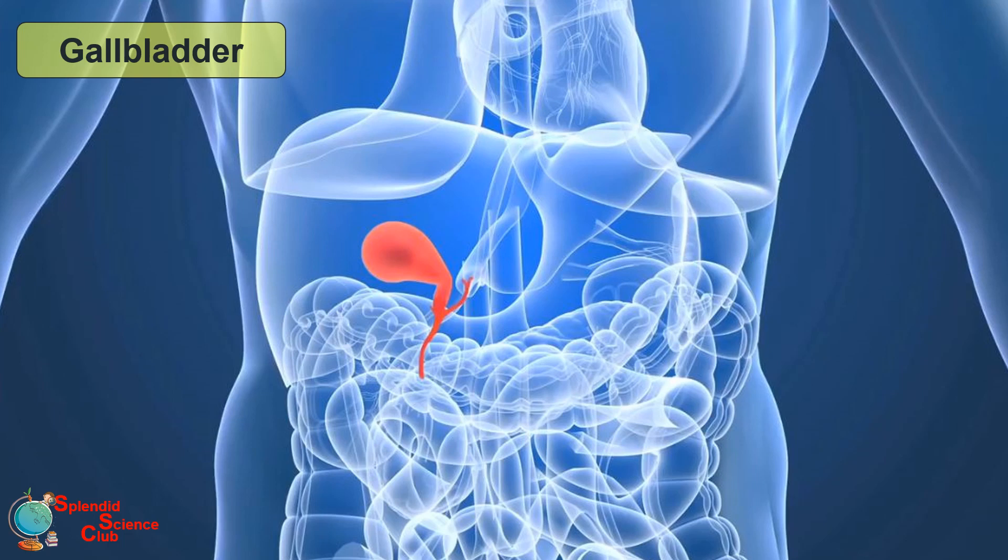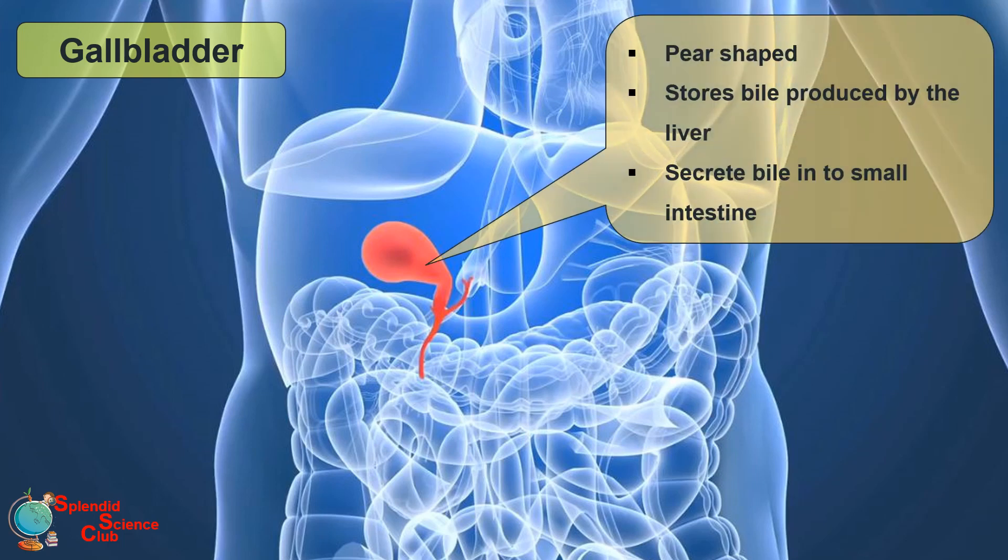The gallbladder is a pear-shaped small organ. Its function is to store the bile produced by the liver and secrete it into the small intestine.